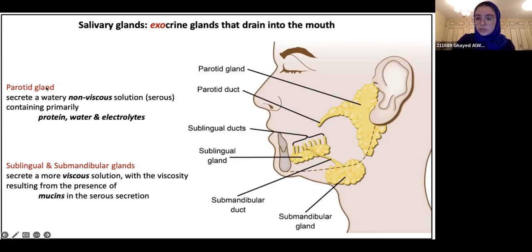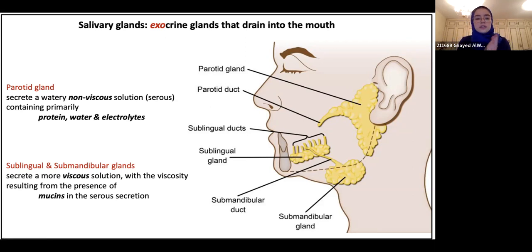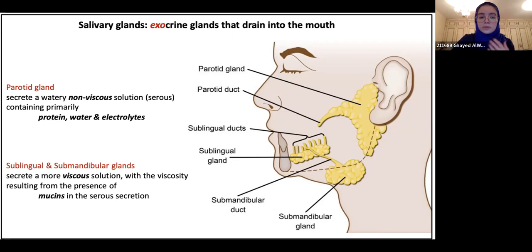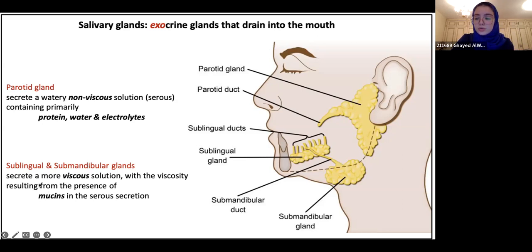The parotid gland secretes a watery solution containing protein, water, and electrolytes. Whereas the sublingual and submandibular glands secrete a thicker, more viscous solution. This is because they contain mucins — a glycoprotein within mucus. Because these glands contain fluid with mucins, it makes sense that their secretion is thick and viscous.